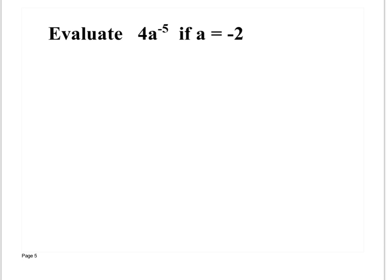Evaluate a to the negative 5th power if a is negative 2. The first thing I would do is rewrite this where a has a positive exponent — I don't want to work with the negative exponent. So I move it to the bottom of the fraction: 1 over a to the 5th power. When you show your work in homework, you have to show that you've moved it to the bottom. Then plug in negative 2 for a, using parentheses since it's negative 2.